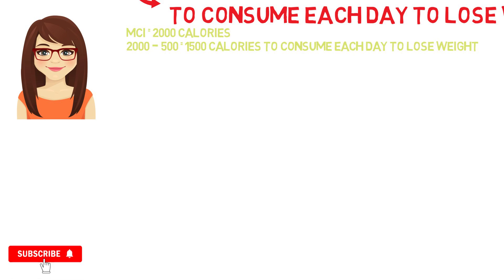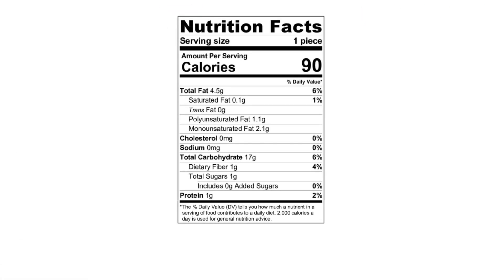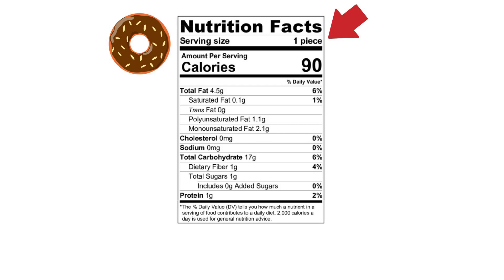Now that we know how to calculate the calories we should consume while dieting, we can look at a nutrition label. Be aware that nutrition label designs can vary, but this example should give you enough information to understand each. One aspect of the label you'll be familiar with seeing is the serving size. This is important when dieting as all nutrition information — calories, carbs, fat, protein etc. — corresponds to that specific serving size, whether it be one item like a donut, or a number of items like five biscuits.